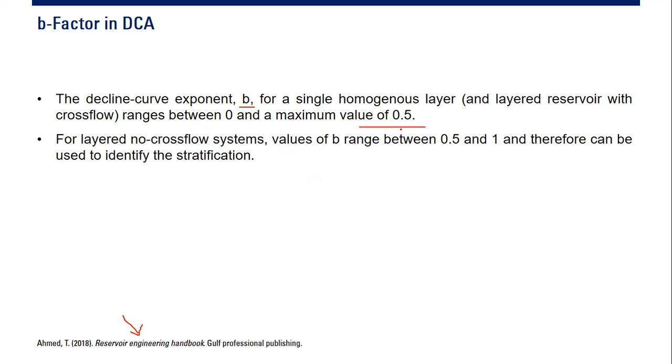If you have a single homogeneous layer, the range of the b-factor is only within zero and maximum 0.5. That's also the case for layered reservoir with crossflow because basically in layered reservoir with crossflow you can average the properties and consider that as a single homogeneous layer with average properties like average porosity, average permeability.